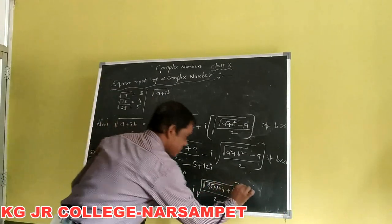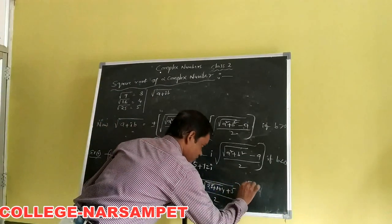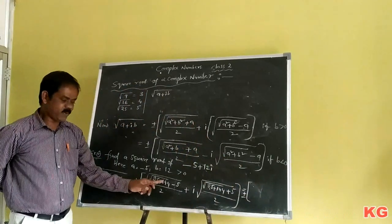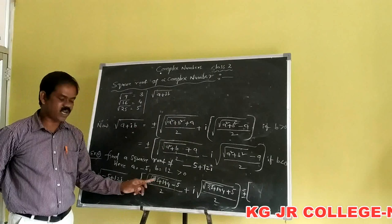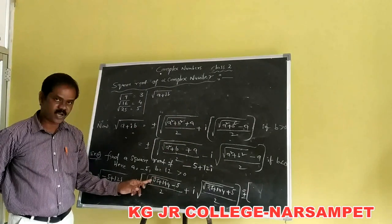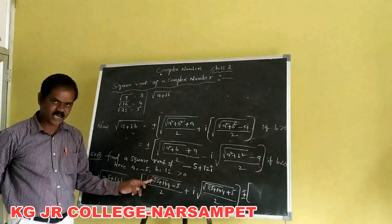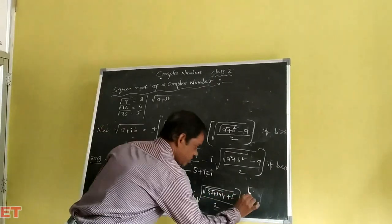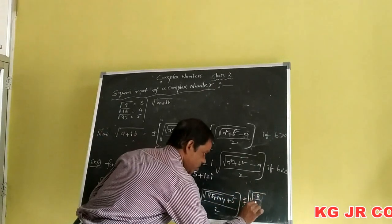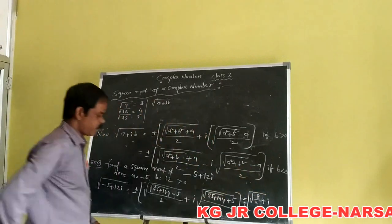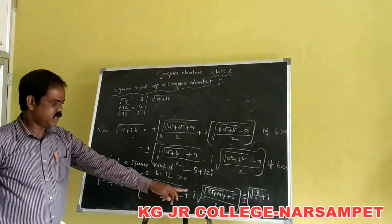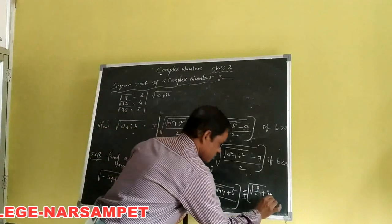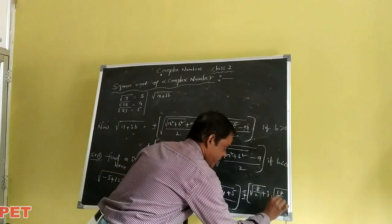Now simplifying: 25 plus 144 equals 169. The square root of 169 equals 13. So 13 minus 5 equals 8, giving square root of 8 over 2. And 13 plus 5 equals 18, giving square root of 18 over 2.